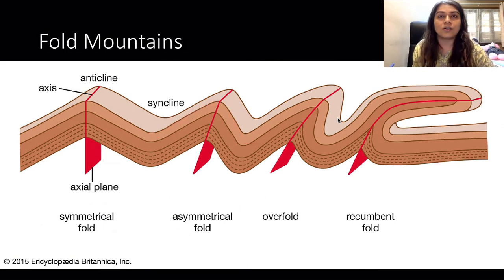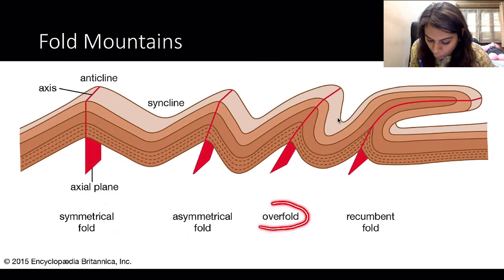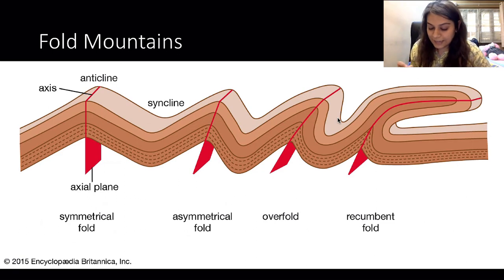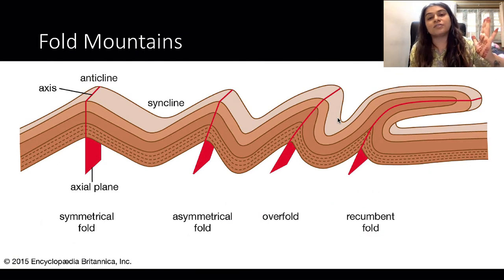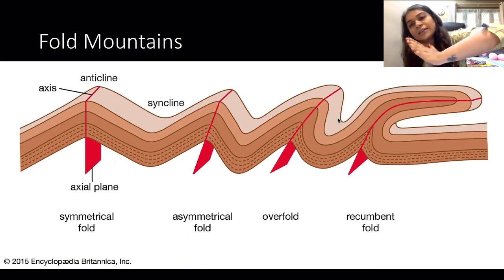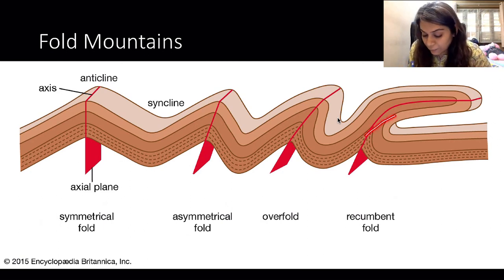When the force is even more and the tip starts bending towards the other side, that is called an overfold — it's not just asymmetric anymore. If the pressure is so much that the fold is basically trying to lie down on the other side, that kind of fold is called a recumbent fold.